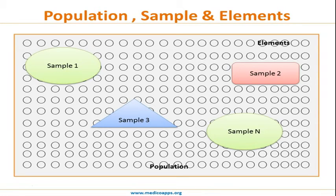So population, sample, elements—these three words, these three keywords should always be there. Correctly keep this in your mind.